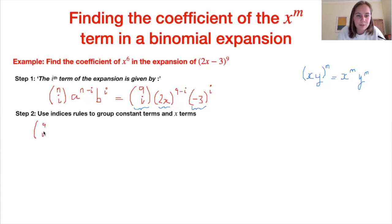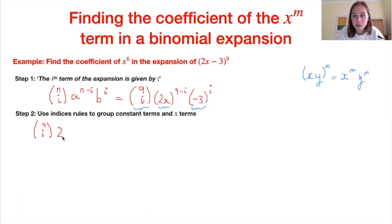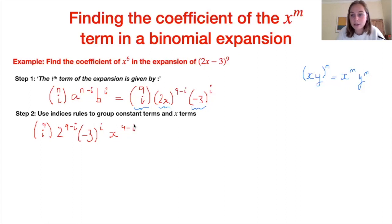Our job is to separate those constant terms from the x terms. Applying the index rule to (2x)^(9−i), we split it into 2^(9−i) × x^(9−i). Grouping the constant terms together: 9 choose i × 2^(9−i) × (−3)^i, and the x term is x^(9−i).